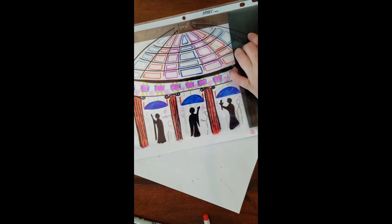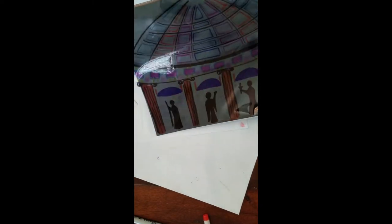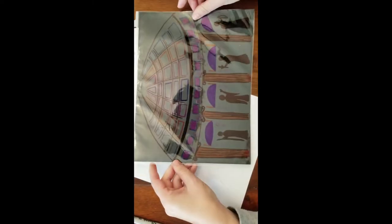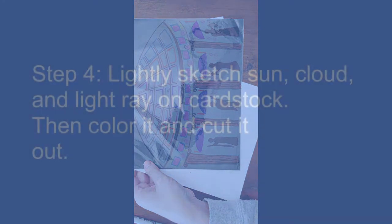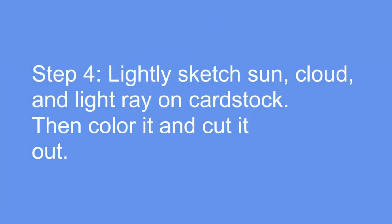Ask Mrs. White for that. You might want to ask for a glow and a grow before you do this part though. Then you are going to be ready to sketch your sun, cloud, and light ray on cardstock. Make sure you get that cardstock from Mrs. White.